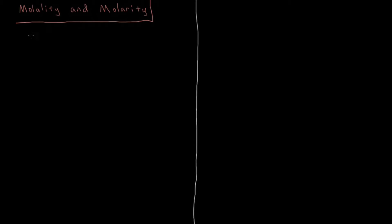In the notation we've discussed previously for liquid-liquid solutions, whenever we have a mole fraction of a component approaching 1 — approaching the entire solution being pure liquid 1 — that component is referred to as the solvent. If we have another component such that its mole fraction is approximately 0, then that would be something very dilute and only sparingly soluble, and we call that the solute. So we're going to use the notation chi-1 for solvent and chi-2 for solute throughout this series of videos.